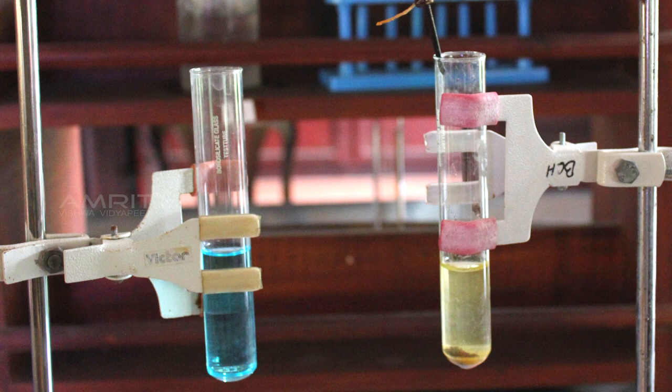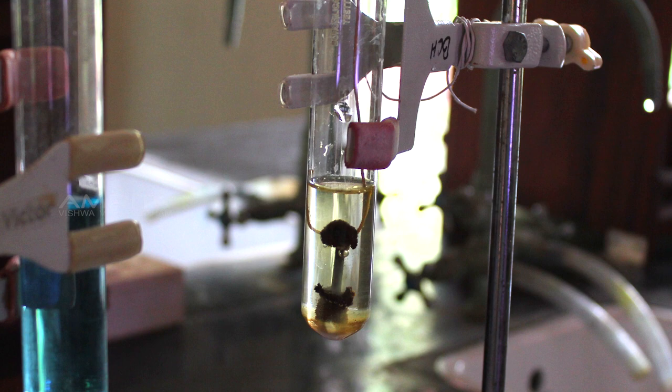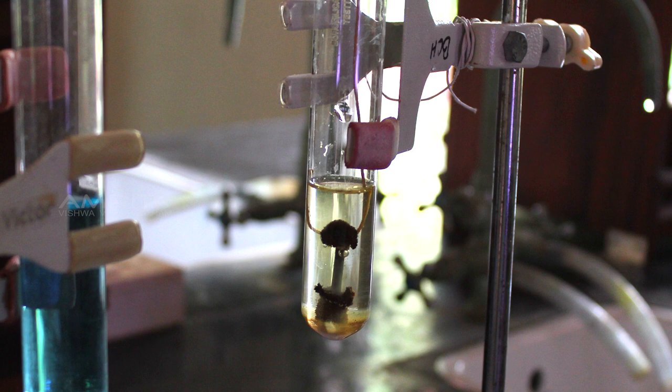The change of colour from blue to green of the solution in which the iron nail was dipped indicates a chemical change in which copper has been displaced by iron from the copper sulphate solution and a new compound, FeSO4, is formed.